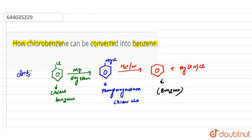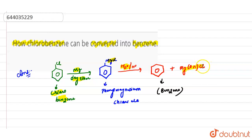So to summarize: first, chlorobenzene reacts with Mg in the presence of dry ether to give the Grignard reagent — a benzene ring with MgCl. Then, on acid hydrolysis, we get benzene and the byproduct Mg(OH)Cl. This is the reaction for the conversion of chlorobenzene into benzene.